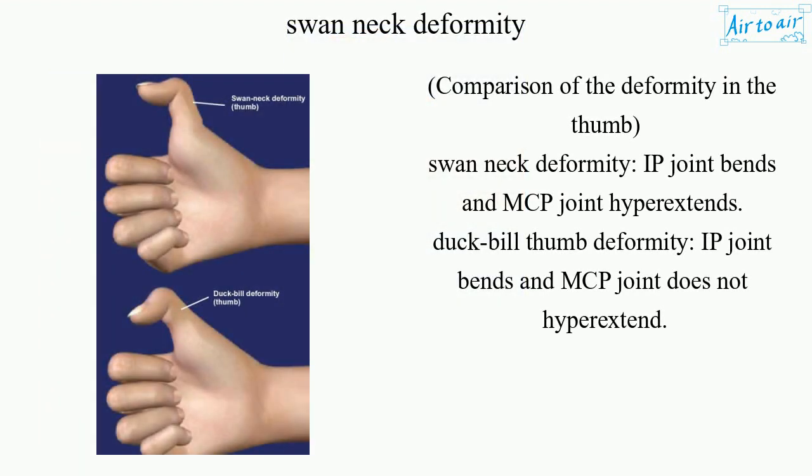Comparison of the deformity in the thumb: Swan neck deformity — IP joint bends and MCP joint hyperextends. Duckbill thumb deformity — IP joint bends and MCP joint does not hyperextend.